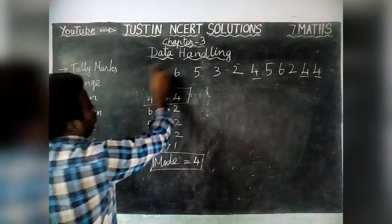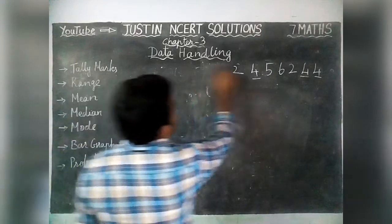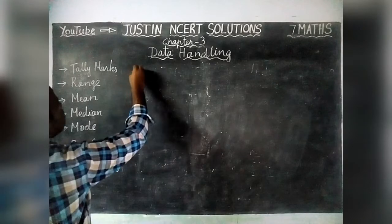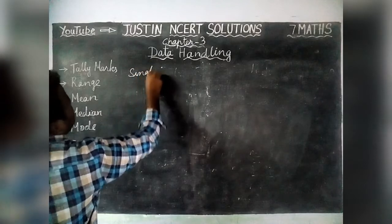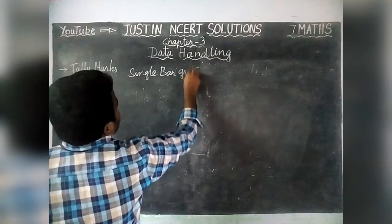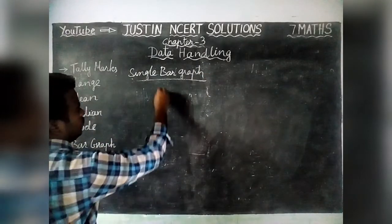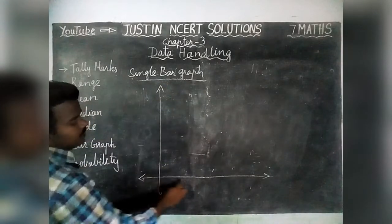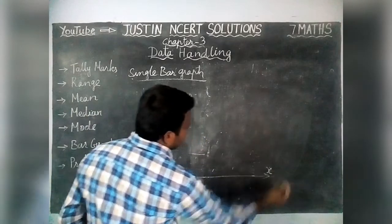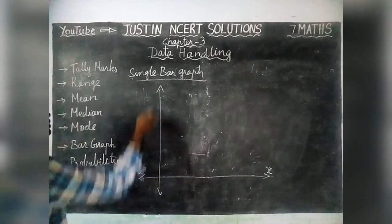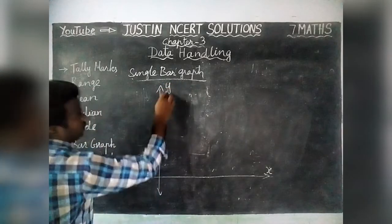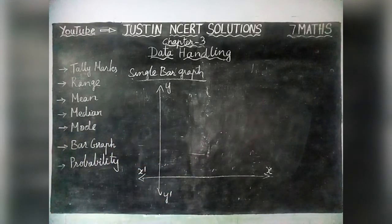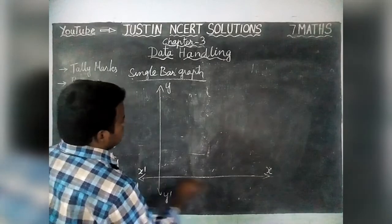Next we are going to see bar graph — how to draw a bar graph and its types. We have two types: single bar graph and double bar graph. We draw bar graphs using x-axis and y-axis. The horizontal line is called x-axis, with positive side x and negative side x-dash. The vertical line is y-axis, with positive side y and negative side y-dash.